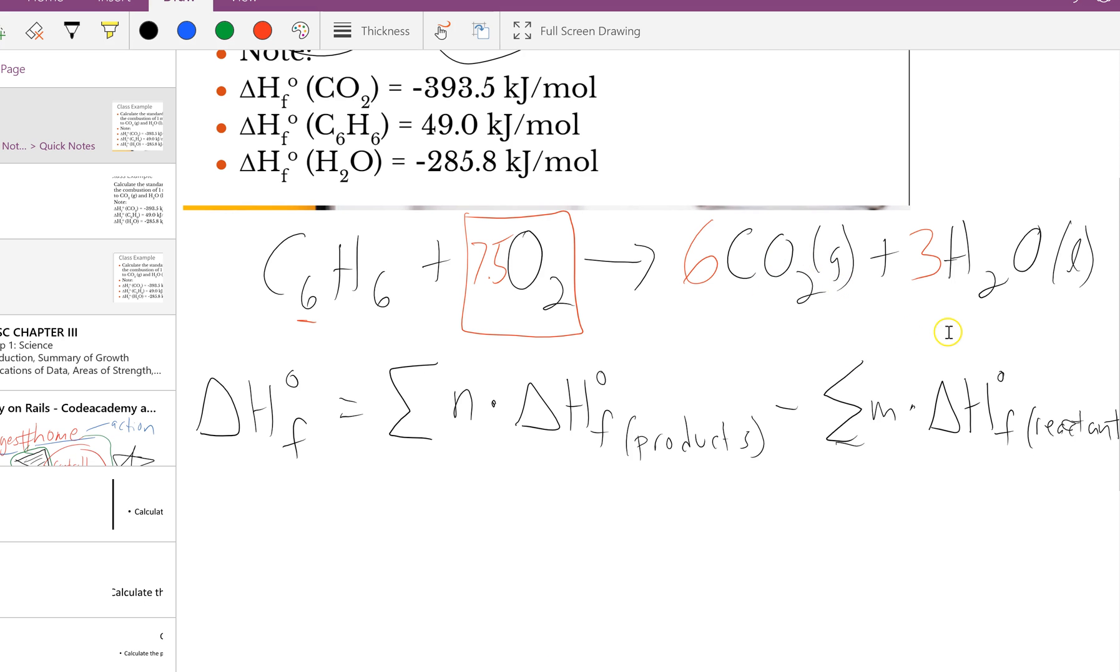Looking back at our equation, we're looking for the sum of the enthalpy of the products minus the sum of the enthalpy of the reactants. The products are carbon dioxide and water, so we write 6 times the standard formation of CO2 plus 3 times the standard enthalpy of formation of water.